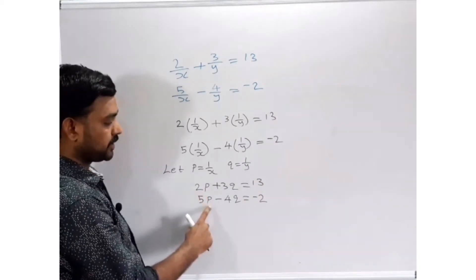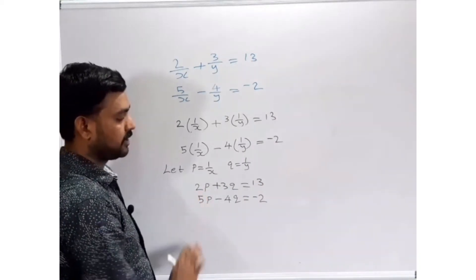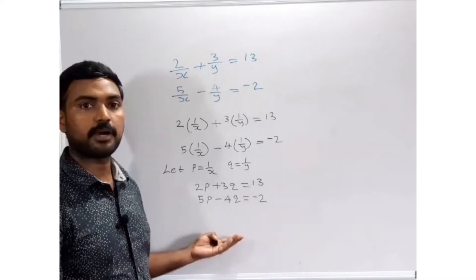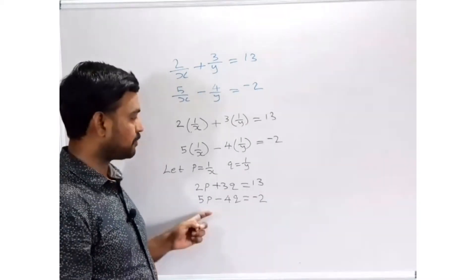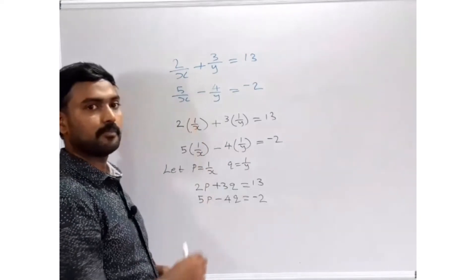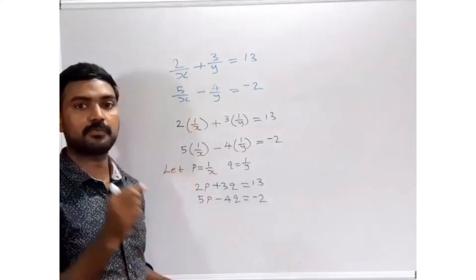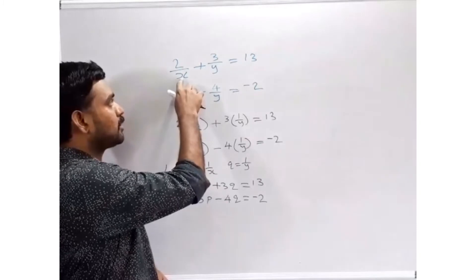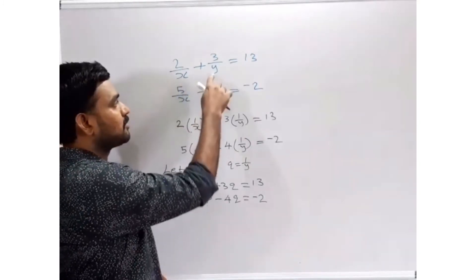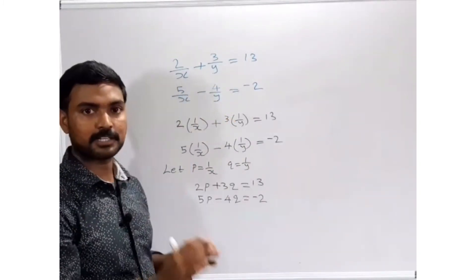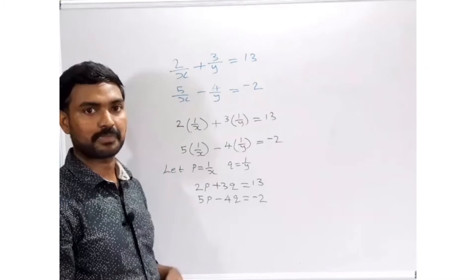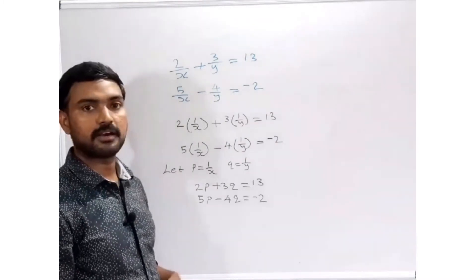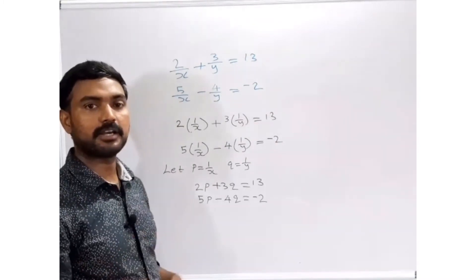This equation is now a pair of linear equations. Why is the original not linear? In linear equations, the variable will not come in the denominator, but in the original question it was given in the denominator. That's why we use the method of reducible to linear form. Now we can use any method — I am going to use the elimination method.